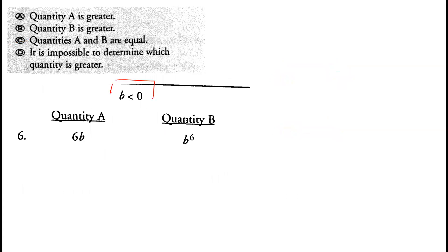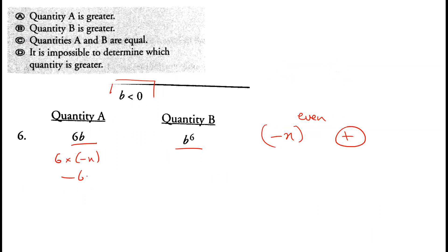B is less than zero, so b is a negative number. Quantity A is 6b and quantity B is b⁶. A negative number raised to an even power always gives a positive result, so b⁶ is positive. Meanwhile, 6 multiplied by a negative number is negative. A positive number is always greater than a negative number, so quantity B is correct. Option B is correct.